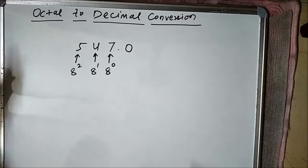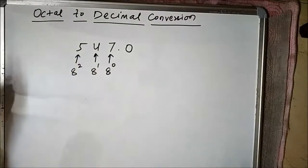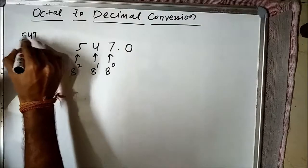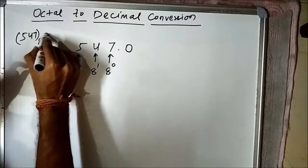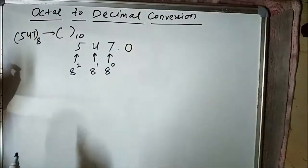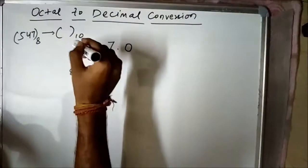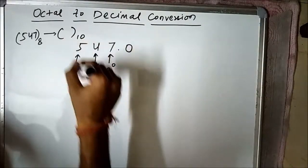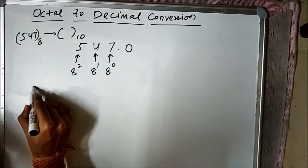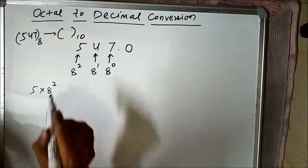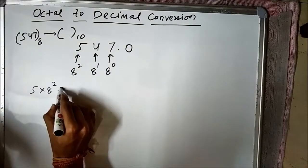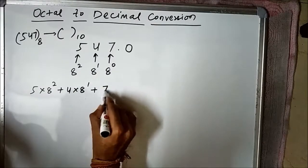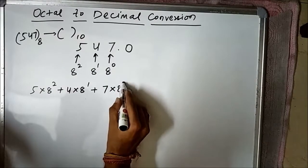In order to convert the octal number 547 into decimal form, we will multiply the respective digits at the given positions with their weight values: 5 into 8 to the power 2, plus 4 into 8 to the power 1, plus 7 into 8 to the power 0.